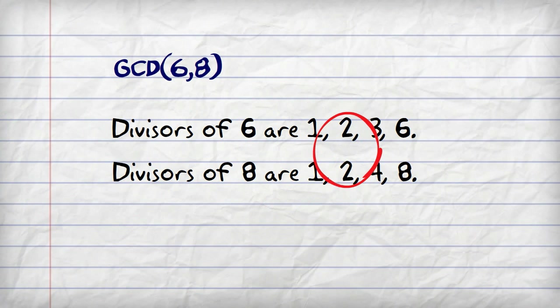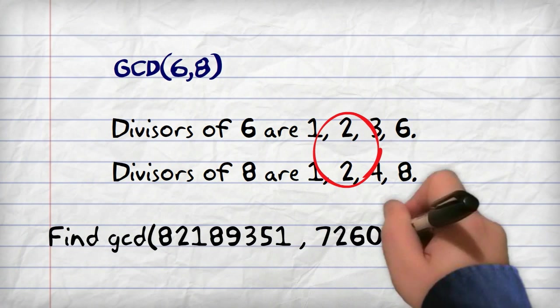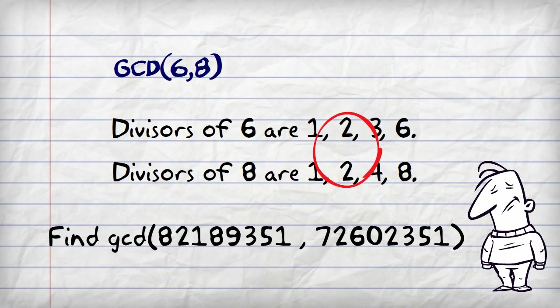Now this method works very well for small numbers, but for large numbers, it's difficult to find the divisors. So if you saw this sort of problem, for example, it would take you many hours using a calculator pen and paper to work out the GCD.